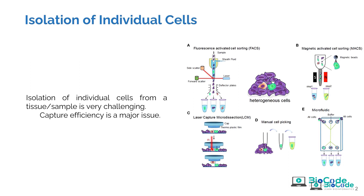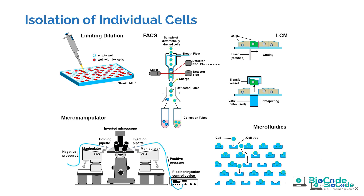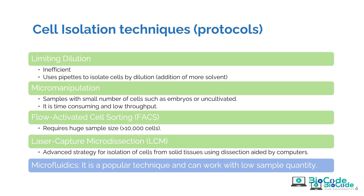Isolation of cells from tissue samples is very challenging. Capture efficiency is a major issue because we may not be able to isolate 100% of the cells. Multiple techniques exist — limiting dilution, FACS, LCM (laser capture microdissection), microfluidics, and micromanipulator — all with varied results. Different companies use different approaches: for example, 10x Genomics utilizes microfluidics, while others may use limiting dilution, LCM, or micromanipulators.